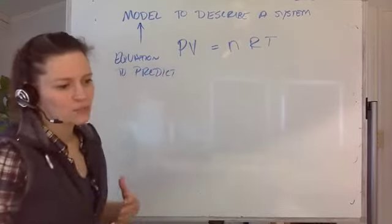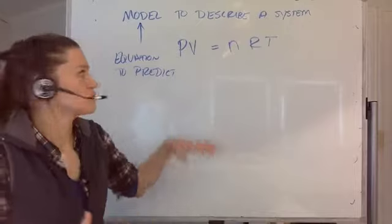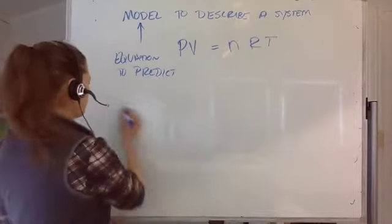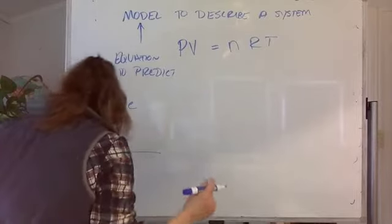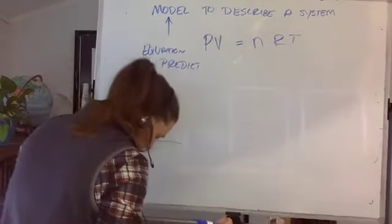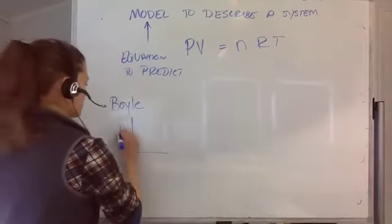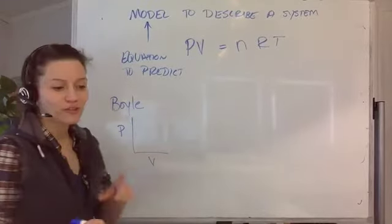So we want to predict the properties or explain the observation. And so Boyle, back in like 1600, figured out that pressure and volume were inversely proportional.